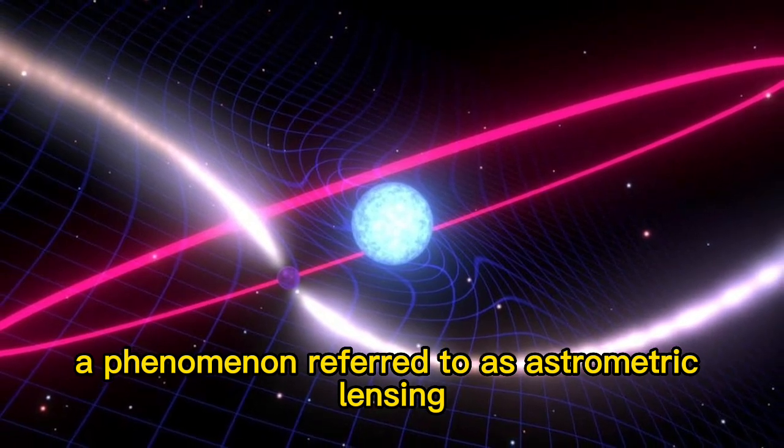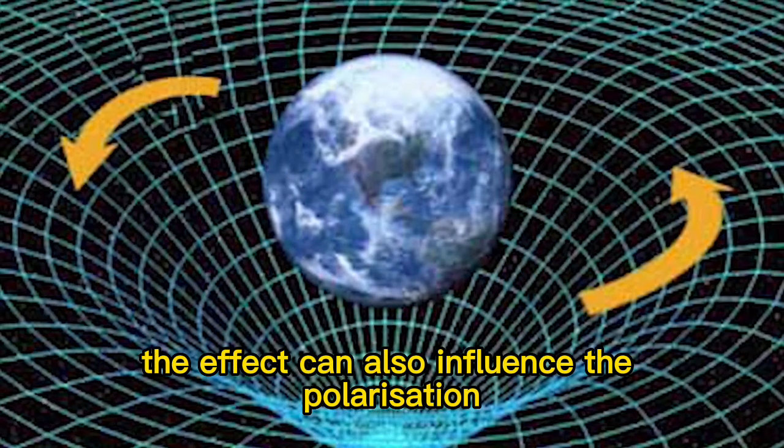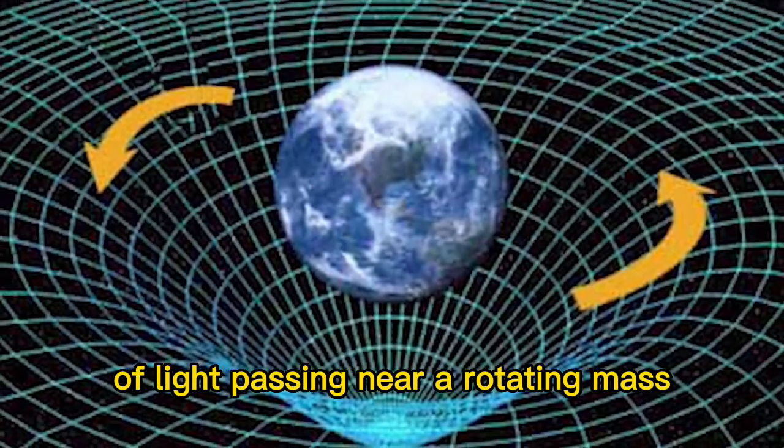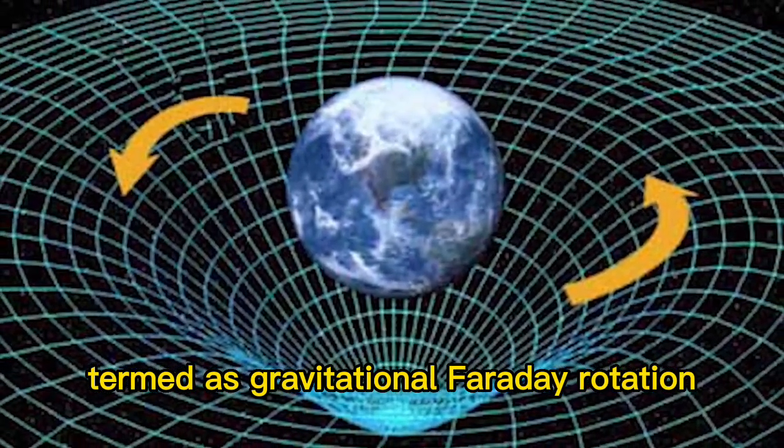a phenomenon referred to as astrometric lensing. The effect can also influence the polarization of light passing near a rotating mass, termed gravitational Faraday rotation.